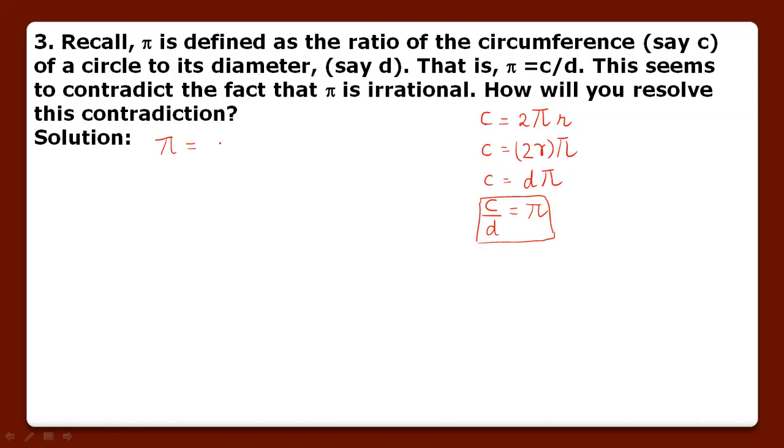So we can write here simply: π equals c upon d. Here we know π is irrational, which means c upon d is also an irrational number.